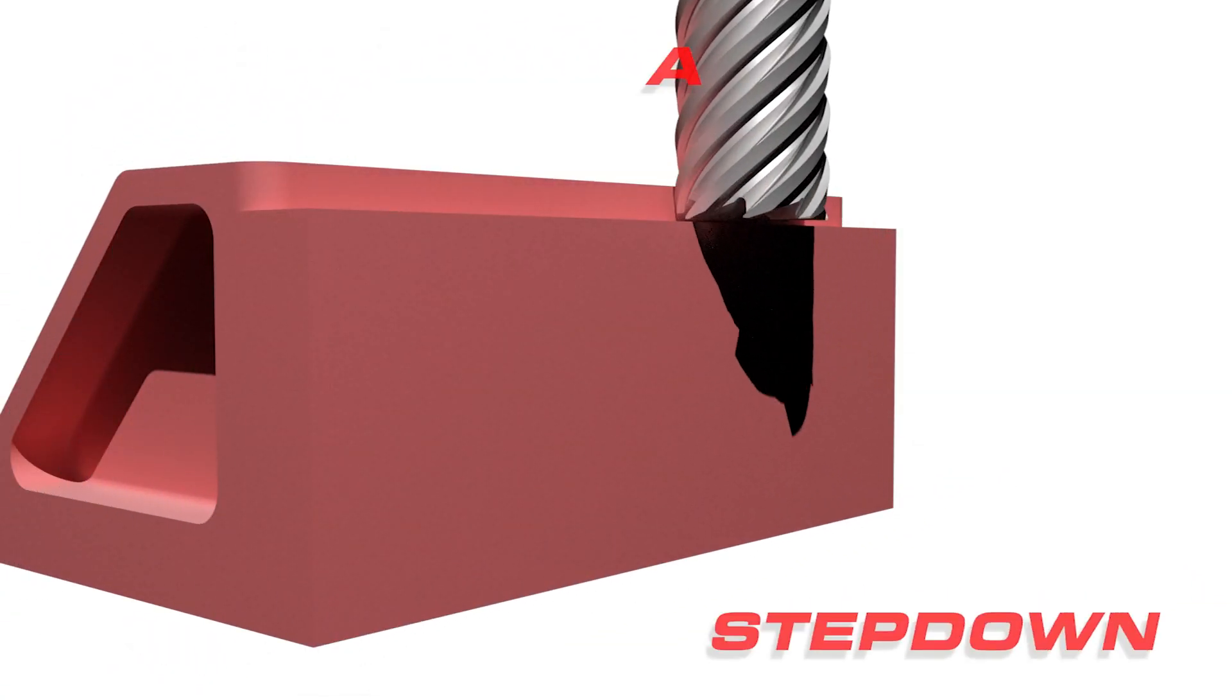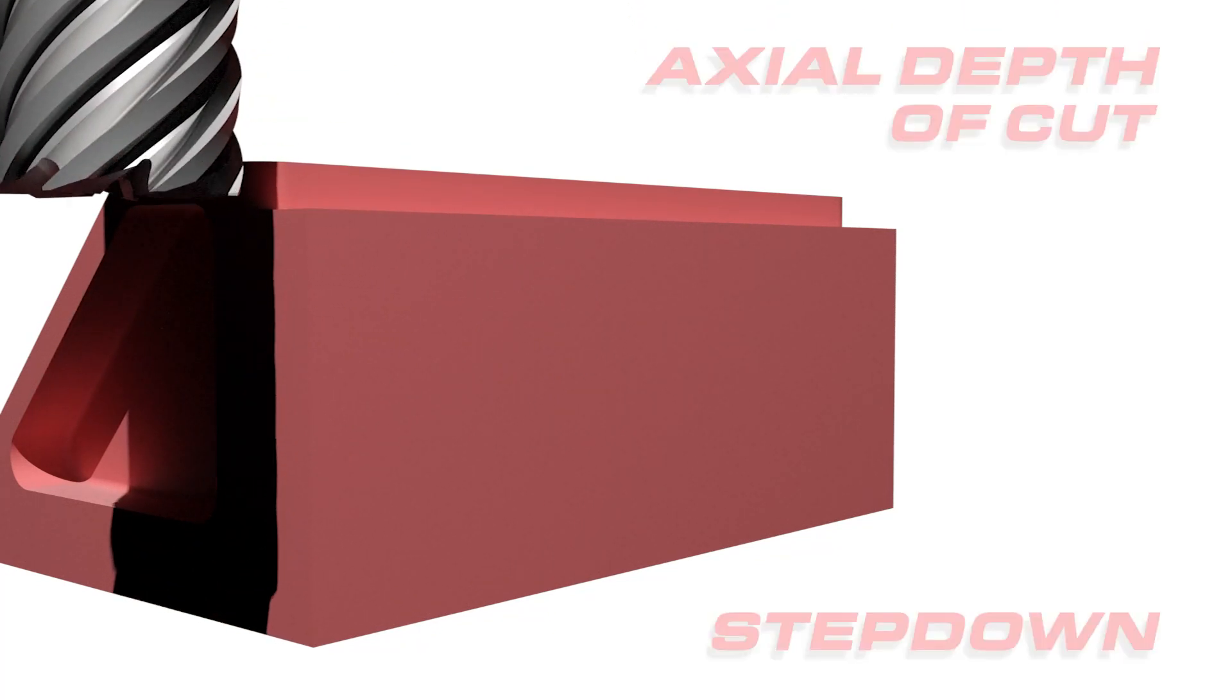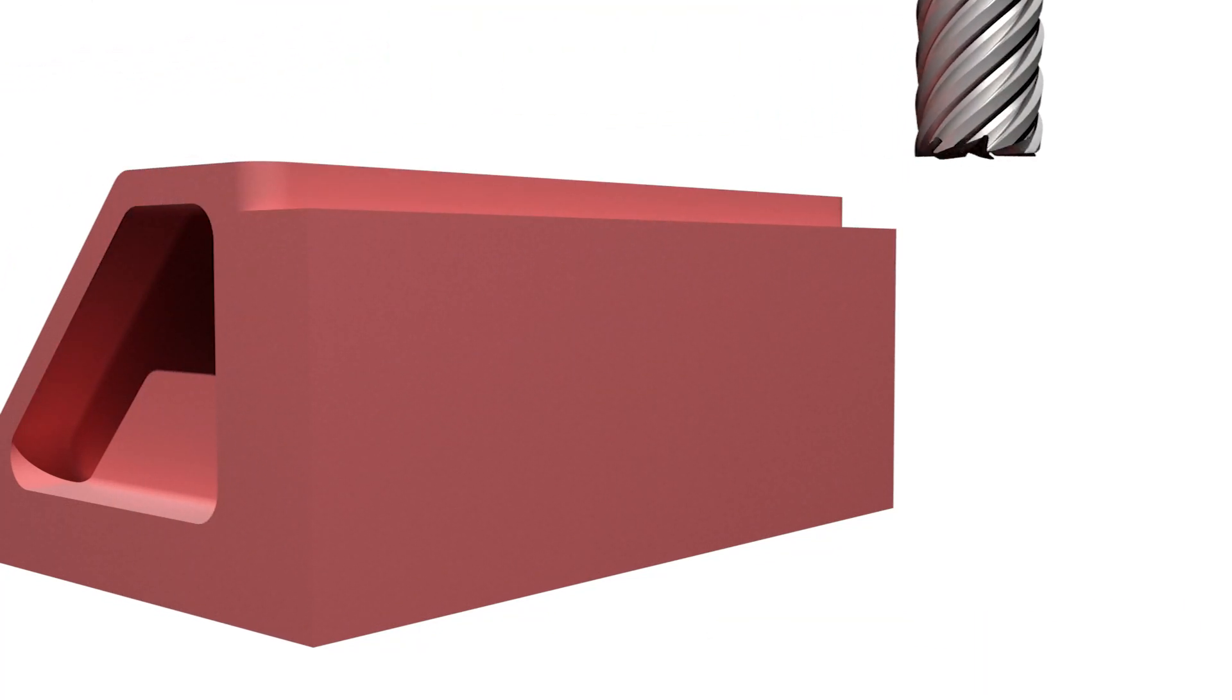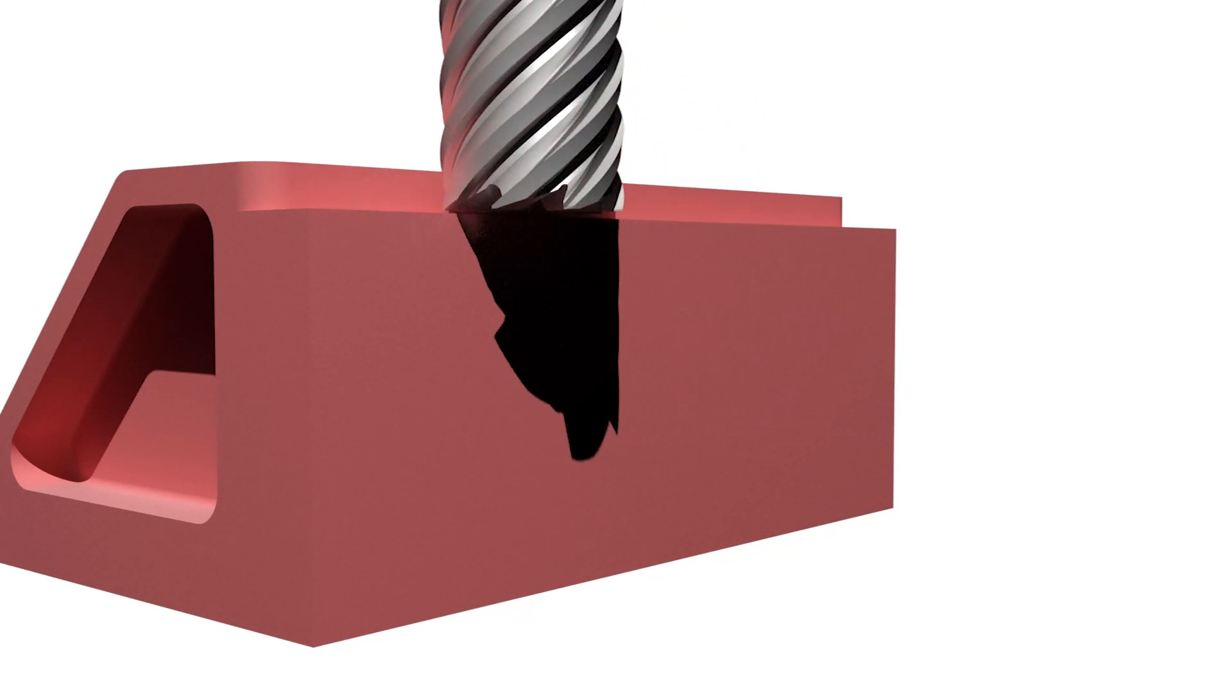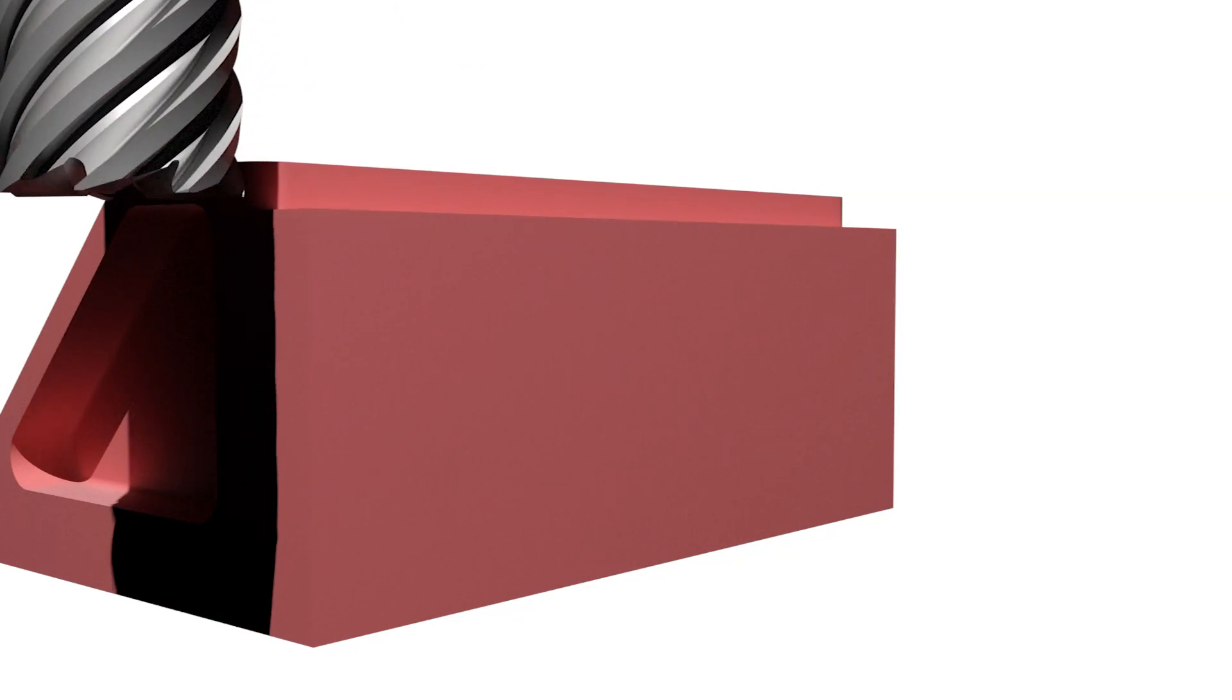Step down, or axial depth of cut, usually corresponds to the z-axis travel of the machine. Taking even steps keeps a constant amount of force on the tool, and removes wasted motion.